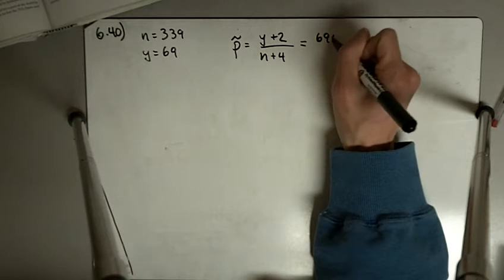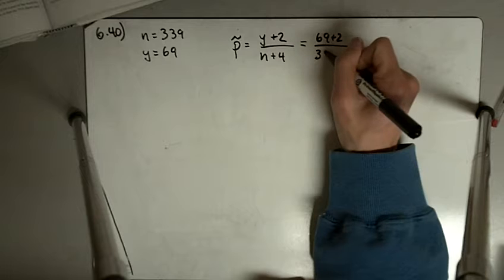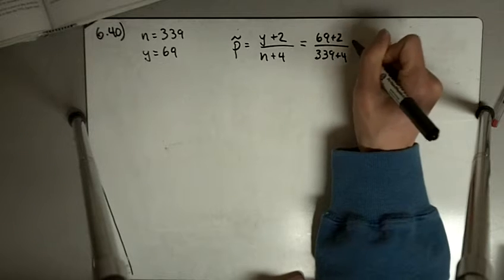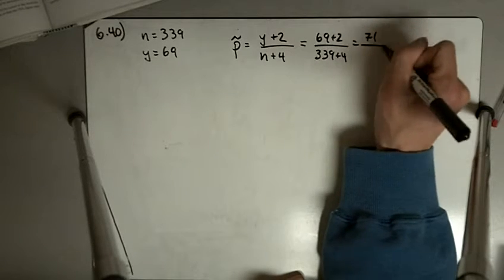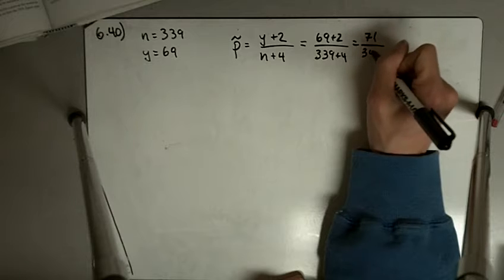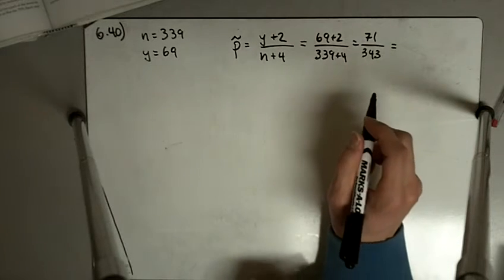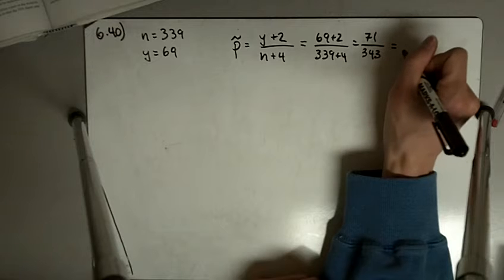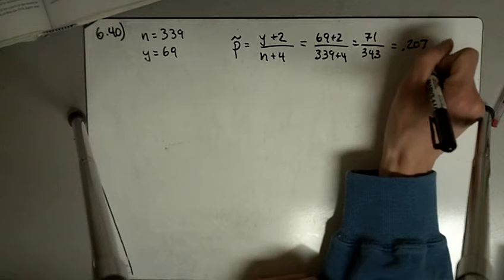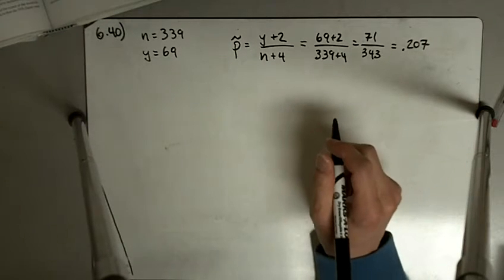So here we get 69 plus 2 divided by 339 plus 4, or in this case, 71 over 343. And when you do that, you get 0.207.